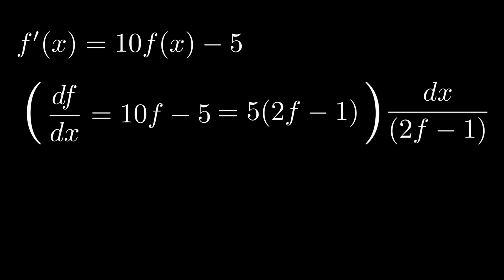So upon doing that we get df divided by 2f minus 1 is equal to 5 dx. Now notice we have f's on the left hand side and x's on the right hand side. So what we can do is integrate both sides of our equation.